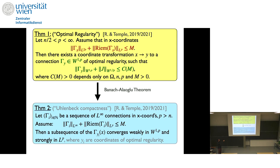This is Uhlenbeck compactness: you just need an initial bound on the curvature — the curl part of the connection — not the full connection derivative. There is a little subtlety: for each connection you get a different coordinate system, so you pull them all back to the initial coordinate system X by transforming them as scalars, not as connections, to avoid losing regularity. Because we have the uniform bound on the Jacobian, the uniform bound is maintained. That's Uhlenbeck's compactness theorem.